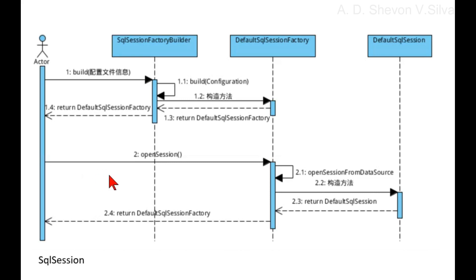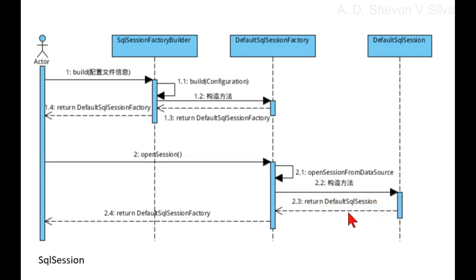The actor is connected to the default SQL Session factory via open session. Then the default Session factory connects to itself via open session from data source. The default SQL Session factory is then connected to the default SQL Session, which is returned to the actor.